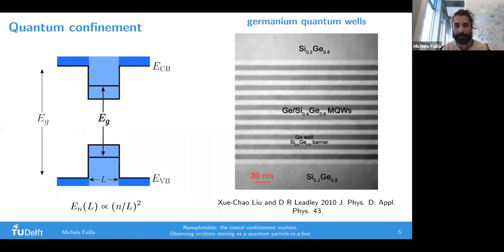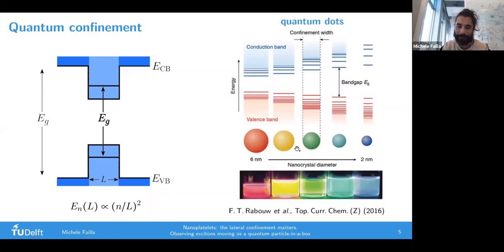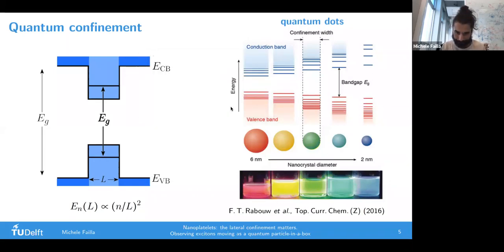Another nice example is quantum dots, where you have confinement along three dimensions - quite strong confinement. Going from quantum dots of six nanometers towards ones of two nanometers, you have an increase of the energy gap. You can actually see this because if you excite the material and create excitons, they will recombine and emit light depending on the band gap. This effect is already used by companies for making LEDs and screens.